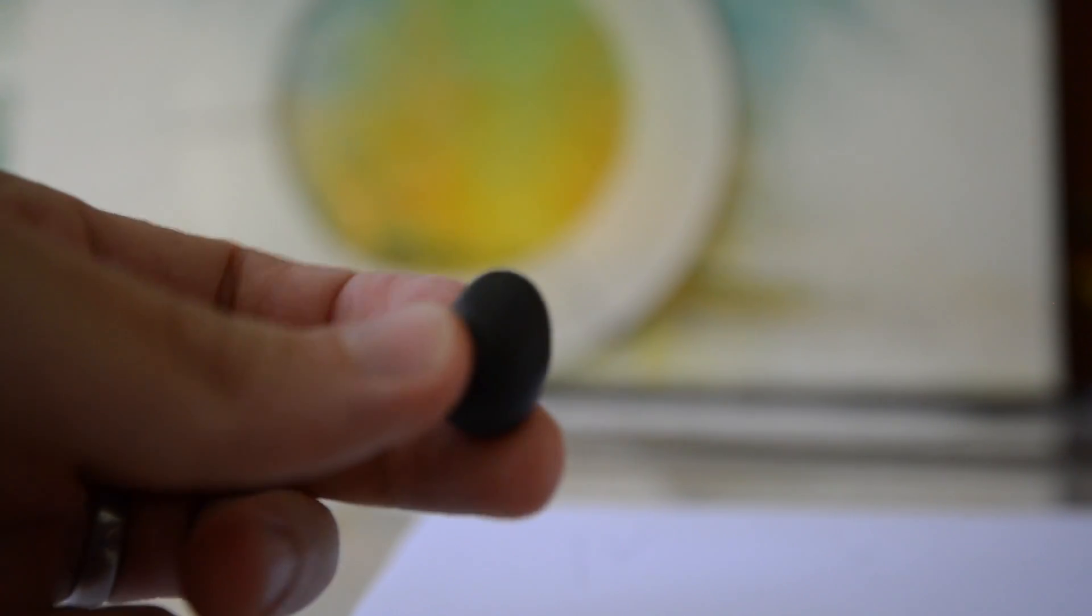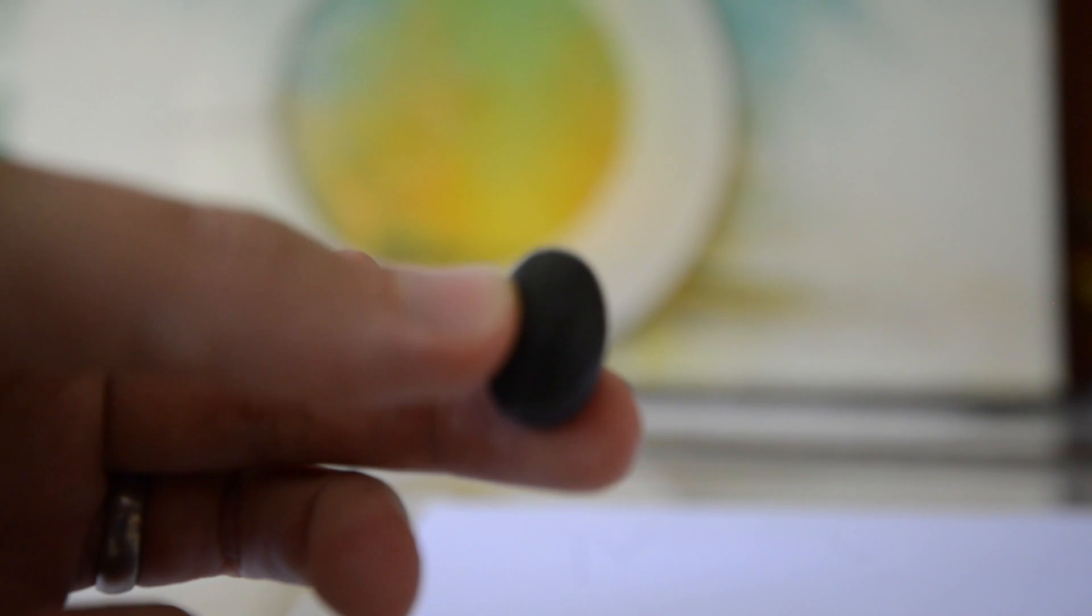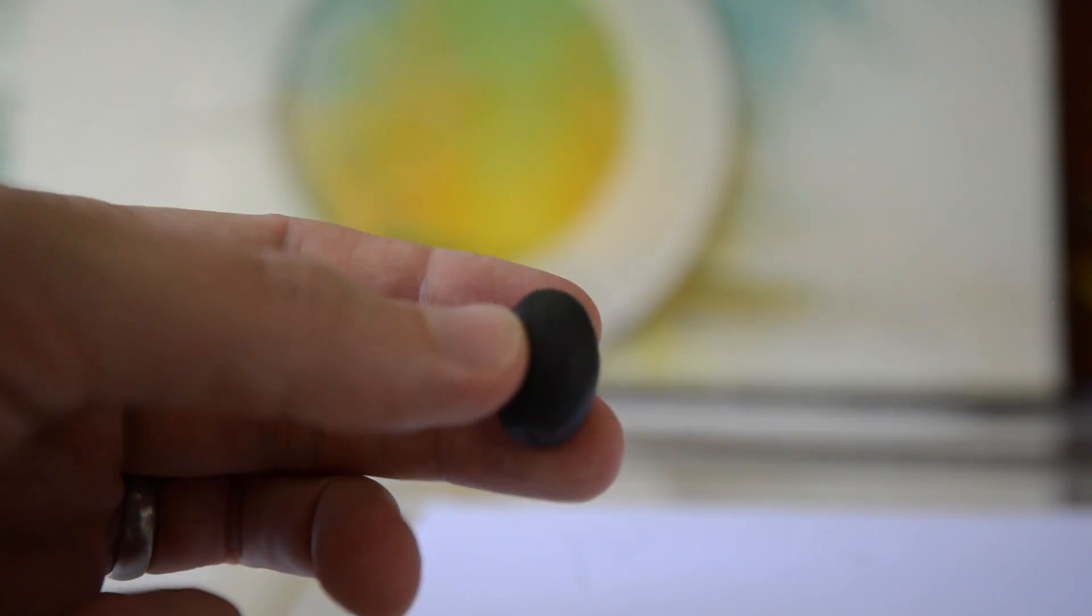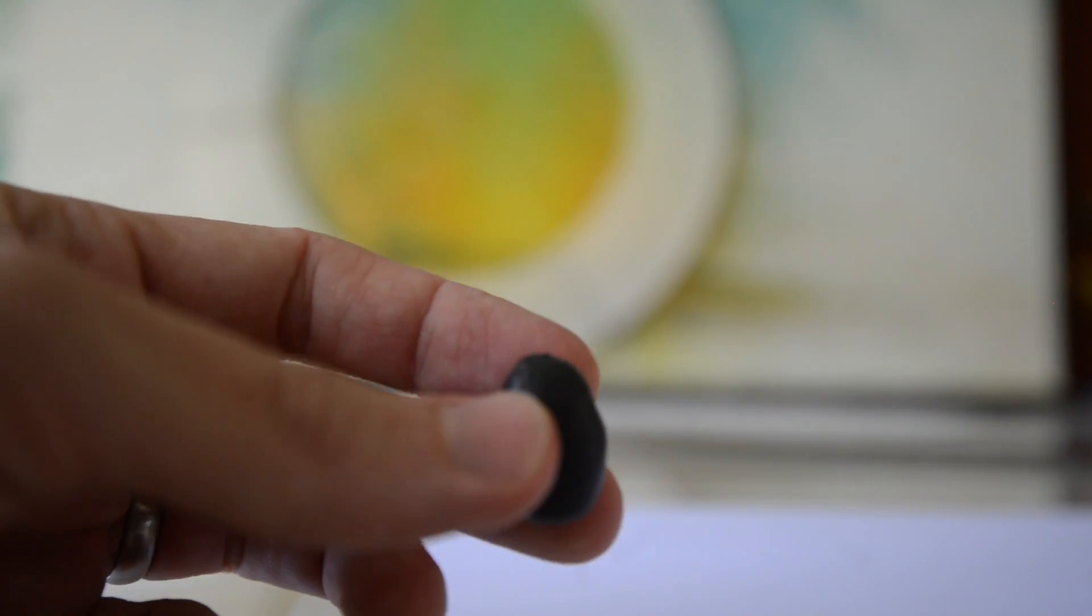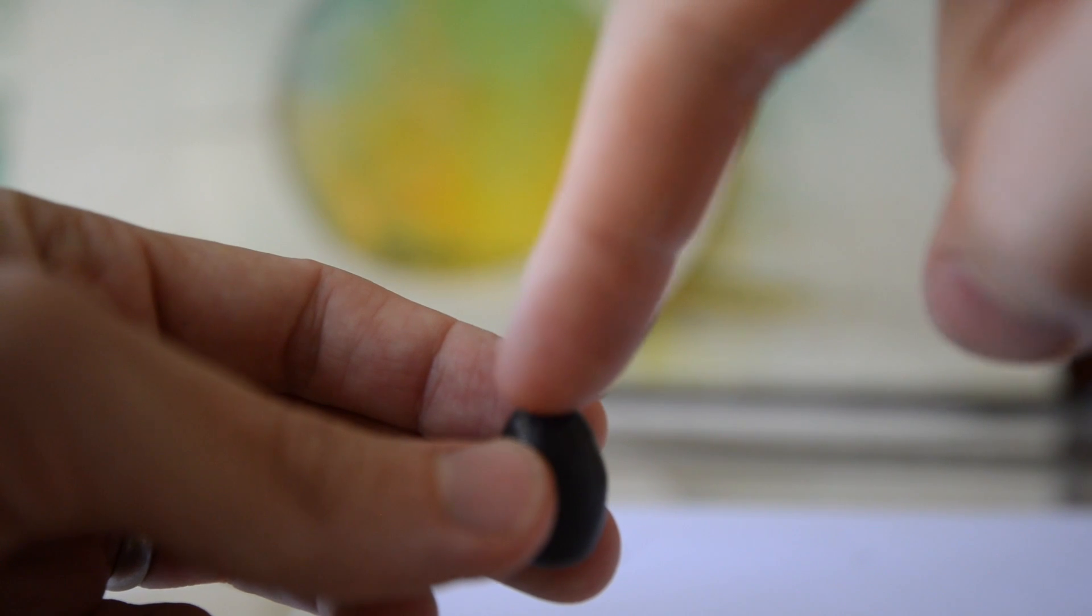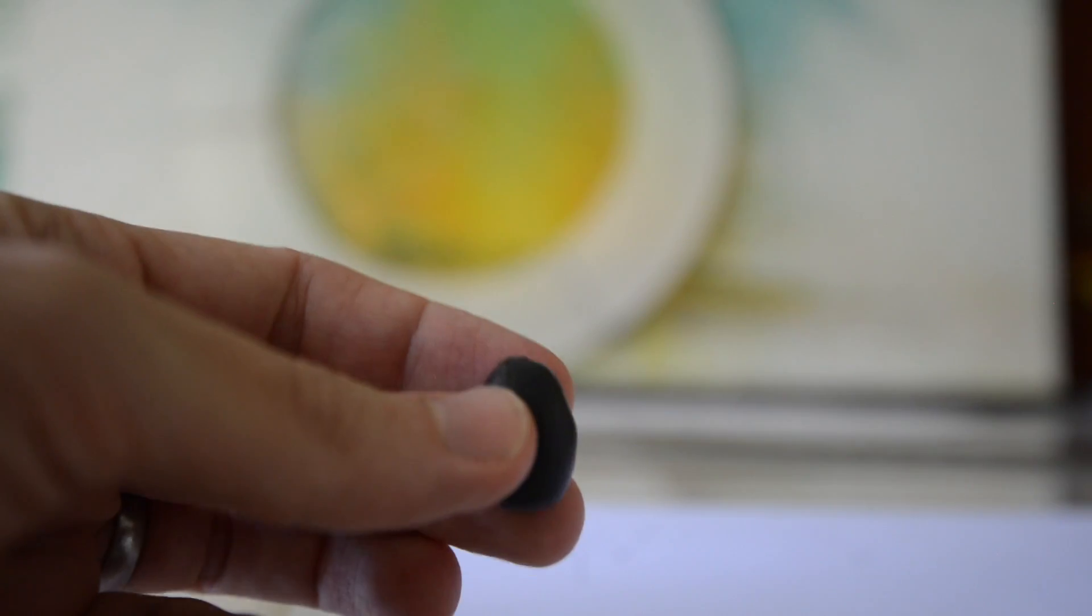The next thing we're going to talk about is putting an eyelet on our weight. Here's our little lead weight, about a half ounce or an ounce. The way it's going to work is our line is going to come down and go through the eyelet and come back up.